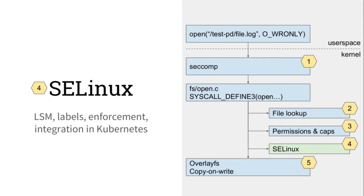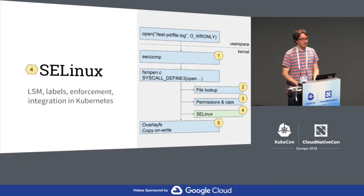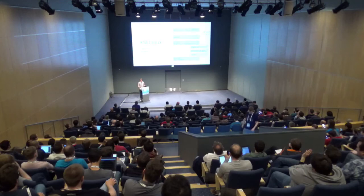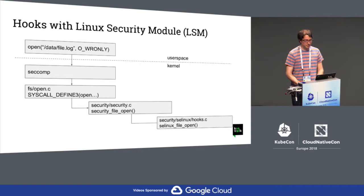Now we have our open system call. It passed seccomp, we found the file to open, the permissions and capabilities were okay, but we still could be restricted by SELinux. SELinux is a Linux security module. Linux security modules are a series of hooks in the Linux kernel, for example this one called security_file_open. There's a hook that will be called during the open system call. Then security_file_open will give the control to one of the Linux security modules, in this case SELinux, to decide whether it's allowed or not to open that file.